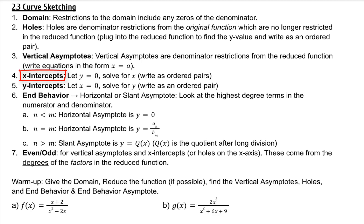X-intercepts: make y equal to zero and solve for x. Y-intercepts: let x equal zero and solve for y. End behavior is either a horizontal or a slant asymptote, maybe two horizontal asymptotes.